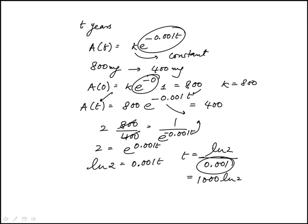And natural log of 2 is 0.693, so this would be 693 years, so that's answer choice c.